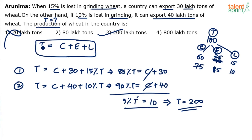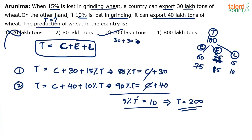Basically, whatever is the total production has three components: first, whatever you lose in grinding; second, whatever is consumed in your country; and third, whatever is exported. You can verify by options. In option 3, with total 200: Case 1 — 15% of 200 is 30. Plus export of 30. Which means in-house consumption is 200 minus 60, which is 140.